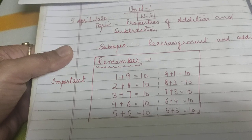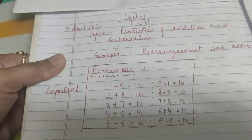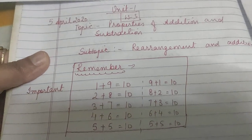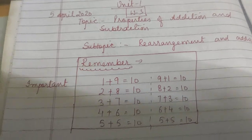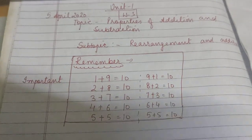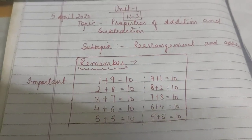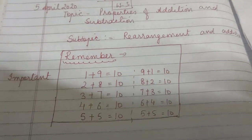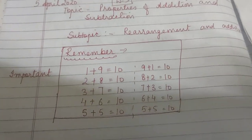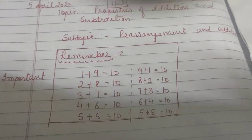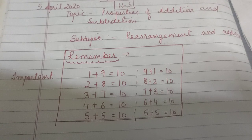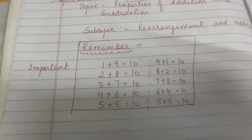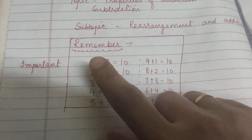Students, let's start Worksheet 3, Rearrangement topic. After discussion of properties of addition and subtraction, let's start rearrangement and its addition. You can go through these rules — how can we make 10?